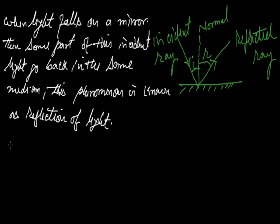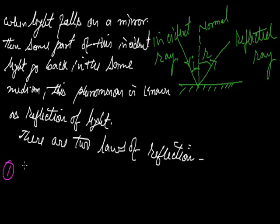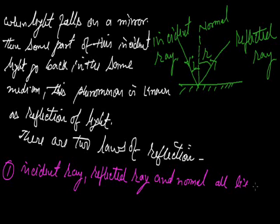There are two laws of reflection. The first law states that the incident ray, the reflected ray, and the normal all lie in the same plane.